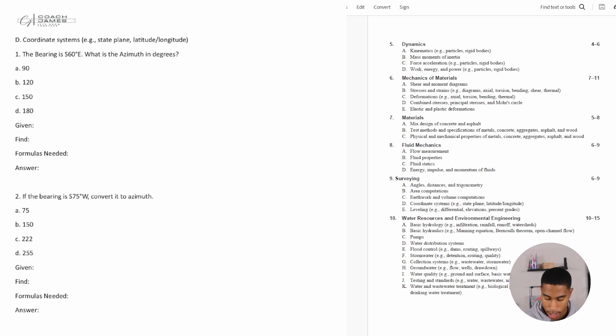So first practice problem says the bearing is south 60 degrees east. What is the azimuth in degrees? So key things to note, or let's first start out by writing out our given information. So we are given the bearing, and we are trying to find the azimuth.